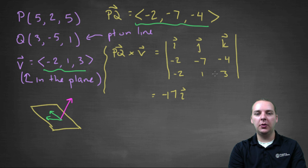The j component will be -6 minus 8, that'll be -14. But you remember the j component, you have to change the sign, so it'll be plus 14j. And then the k component will be -2 minus 14, which will be -16k.